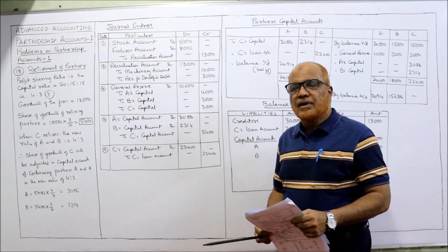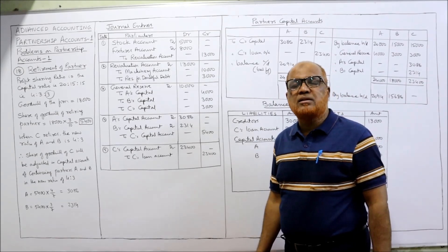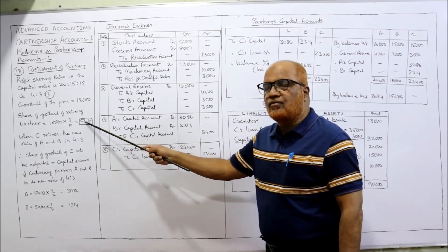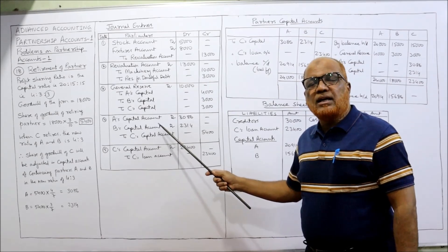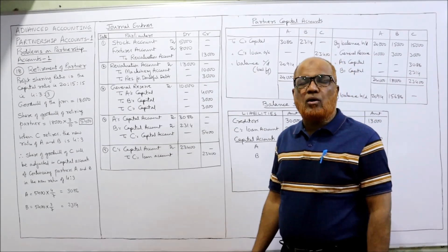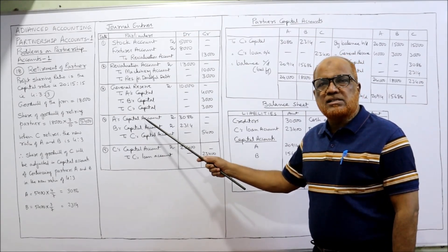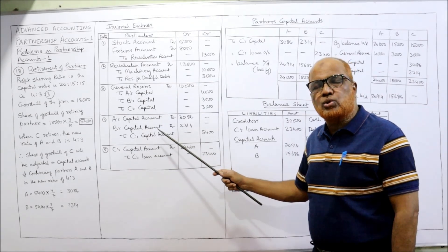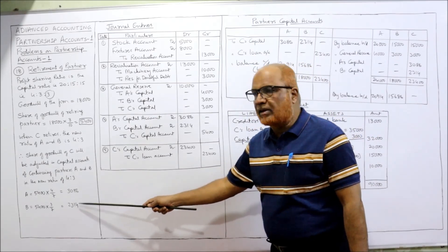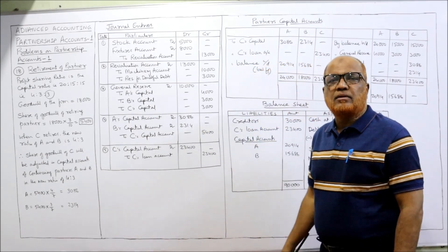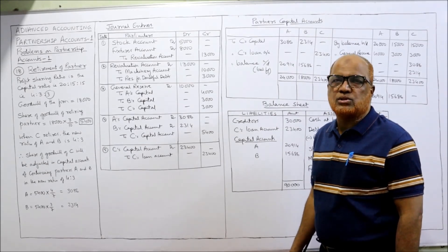Next comes goodwill. The goodwill amount of 5,400 should be credited to C's capital. The debit will be given to continuing partners A and B. Entry: A's capital account debit 3,086, B's capital account debit 2,314, to C's capital 5,400. Narration: being the goodwill due to retiring partner adjusted in the capital accounts.